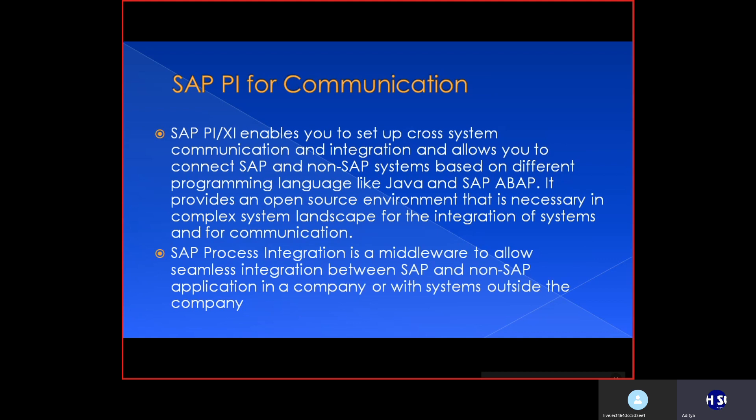SAP PI or XI enables you to set up cross-system communication and integration, and allows you to connect SAP and non-SAP systems based on different programming languages like Java and ABAP. It provides an open-source environment necessary for complex system landscapes for integration and communication. Process integration is actually a middleware — it allows seamless integration between SAP and non-SAP applications within a company or with external systems.